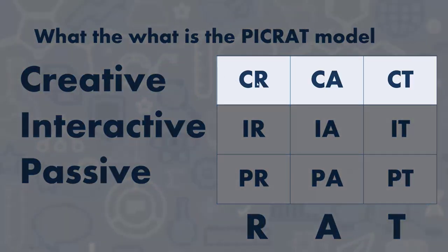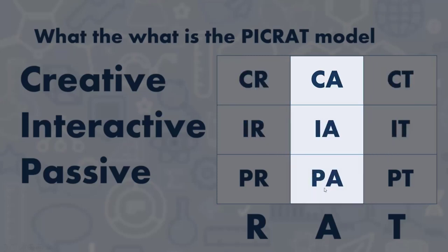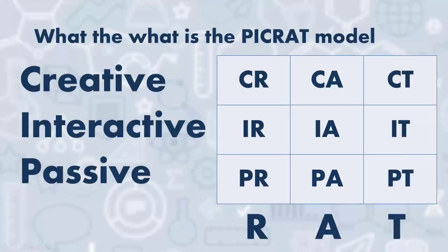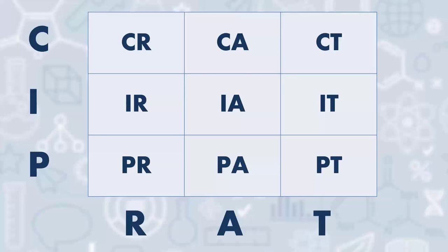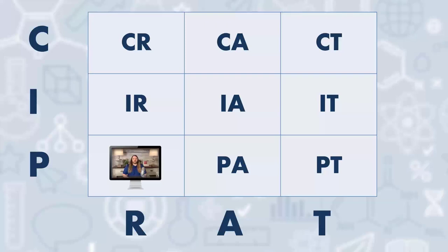In the top row of the matrix are the C's for creative — replacement creative, amplifying creative, and transformative creative. Let's use video as an example. Suppose I create a video — an overview for a module, an announcement, or a screencast — and have my students watch it. That falls under passive learners, and it's essentially replacing a live lecture. I'm replacing an in-person presence with an online video. The students are passive and it's a replacement, which is fine.